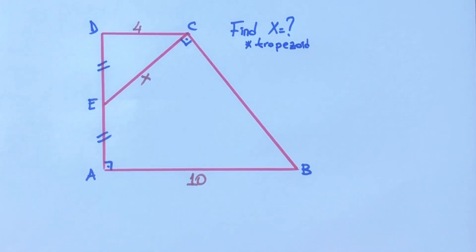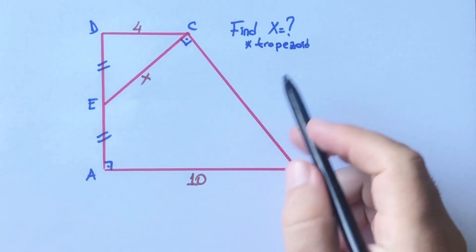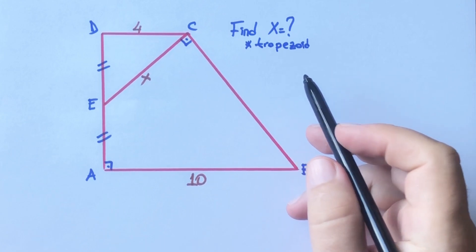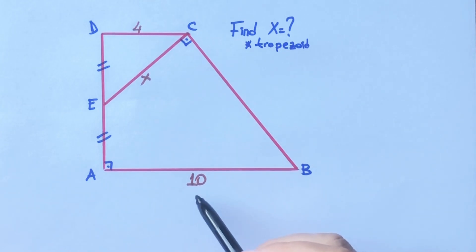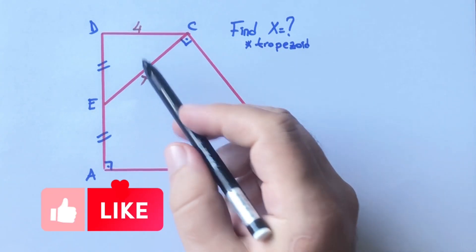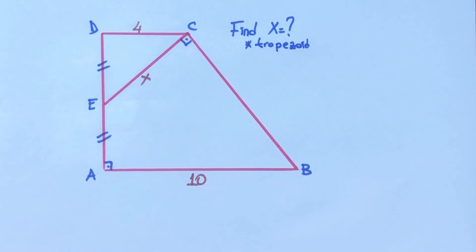Hello everyone, in this video we have one trapezoid. These two parts are equal, and here is 4, here is 10 units, and x is asked.